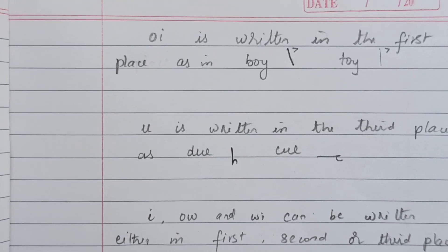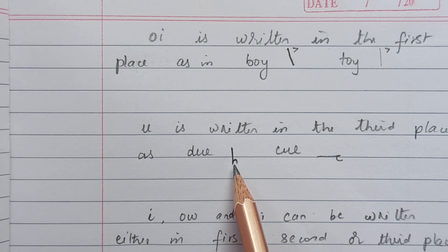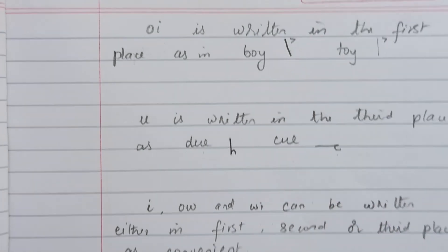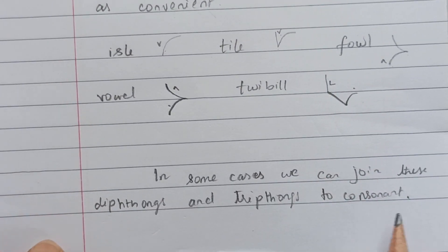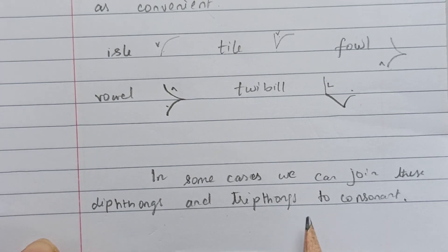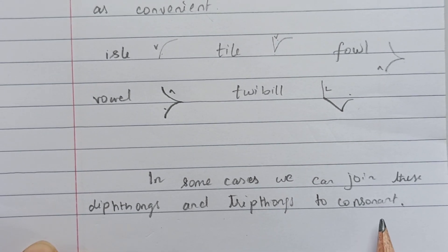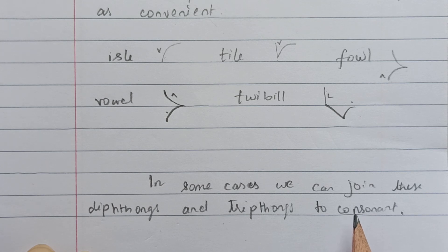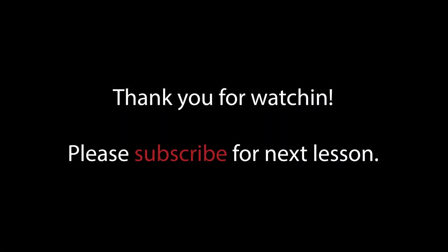You can see that while writing U, I have joined U to D and U to C (or K). So in some cases we can join these diphthongs and triphthongs to the consonant, which I'll explain in my next video. Hope you understood and enjoyed this video — keep practicing, and I'll see you in the next video. Thank you for watching!